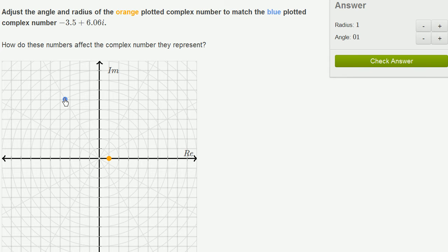And now they want us to think about it in the polar form. And so they tell us that we can adjust the angle, which is often called the argument when you're plotting a complex number in this form, and the radius, which is often called the modulus.